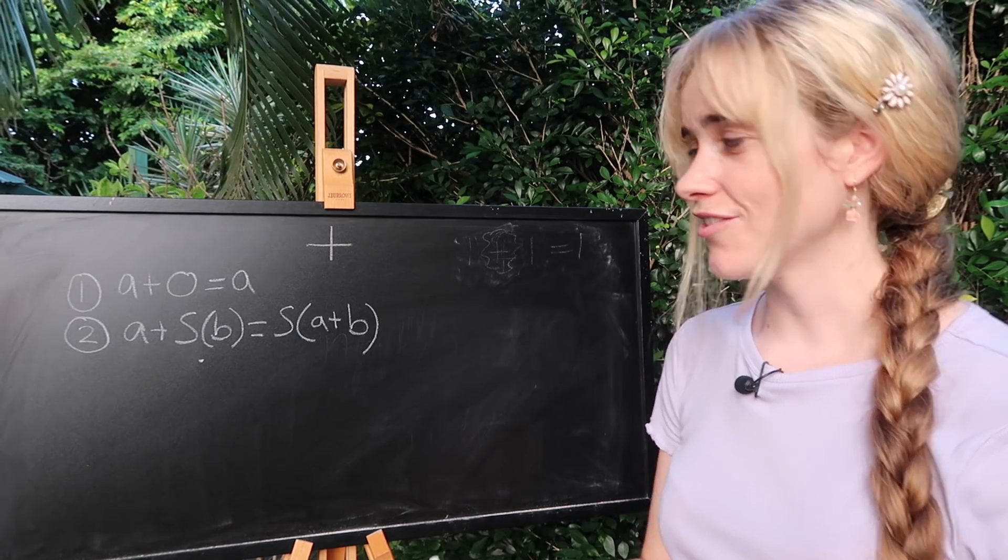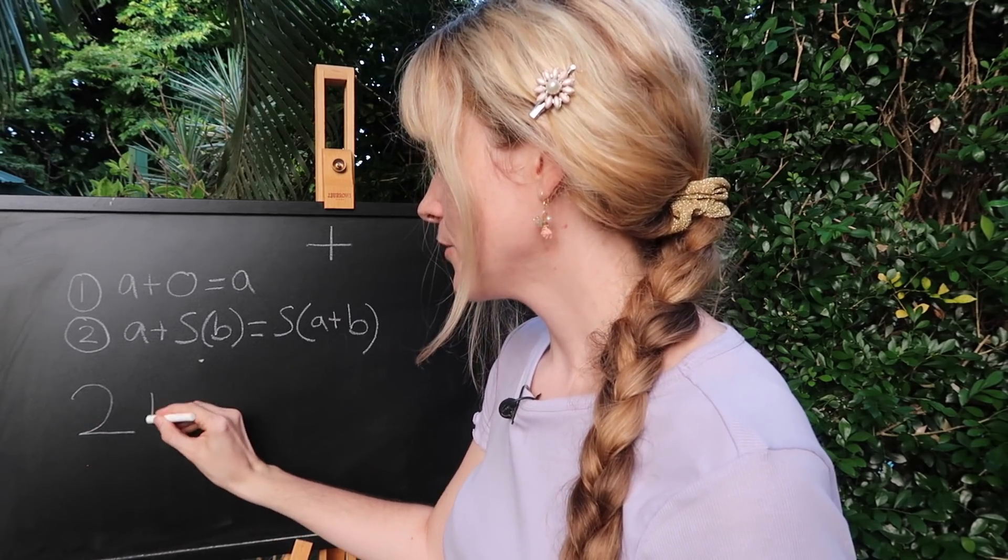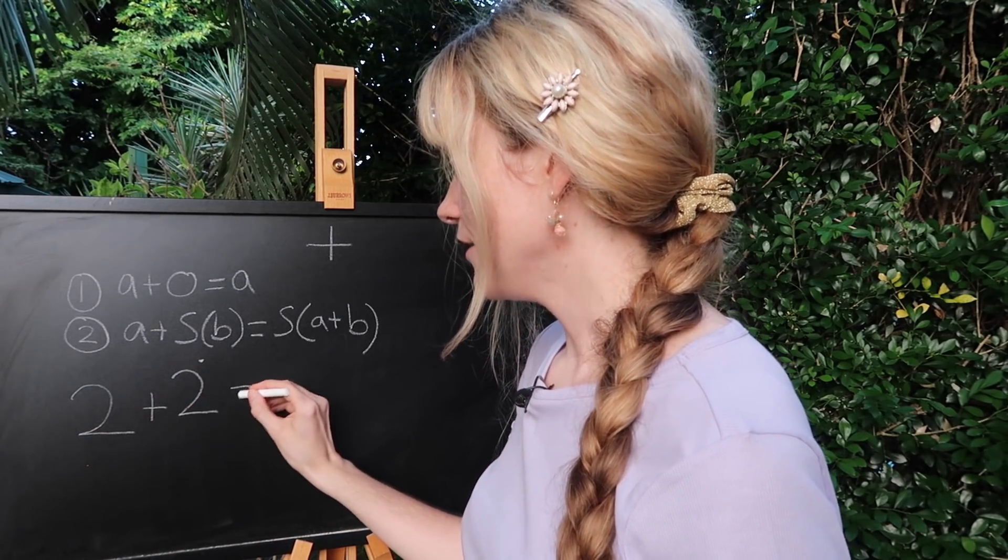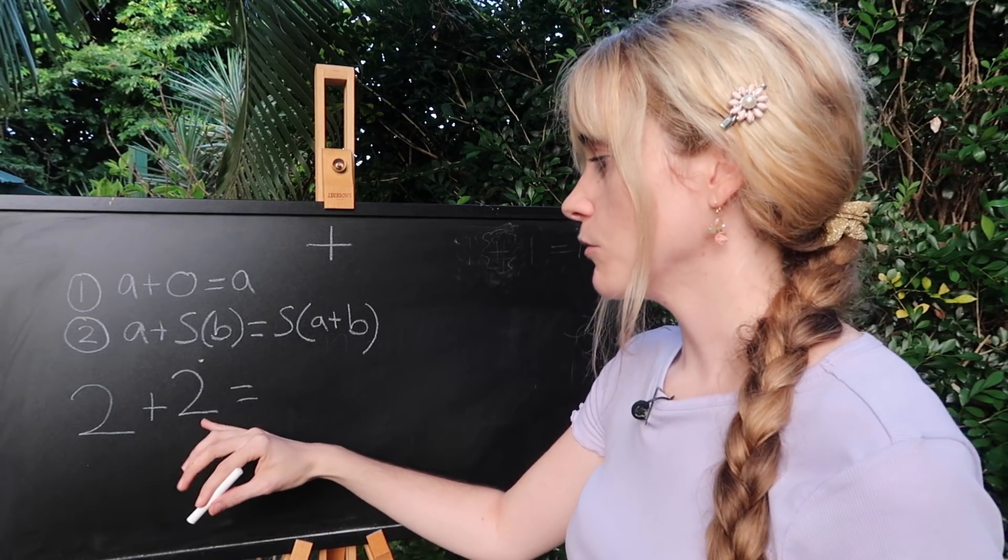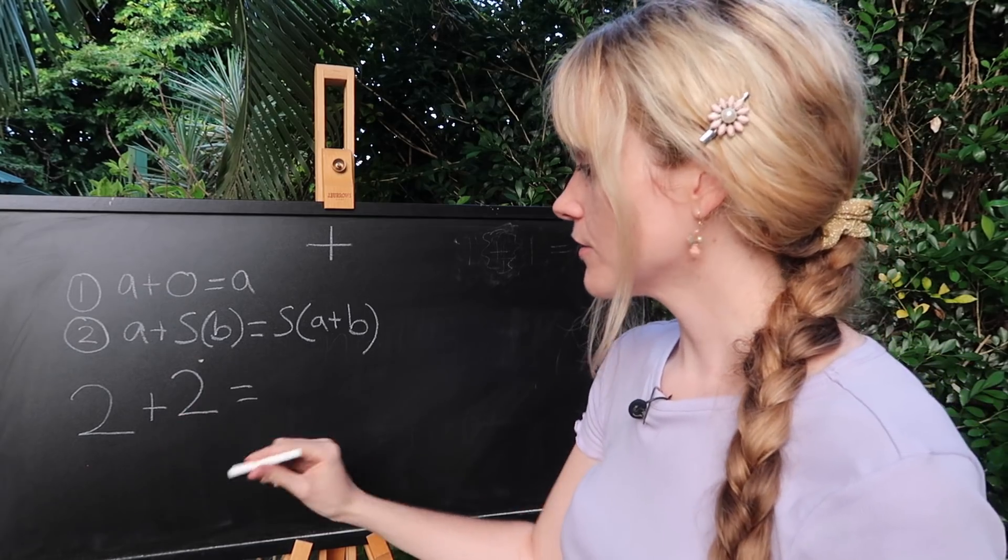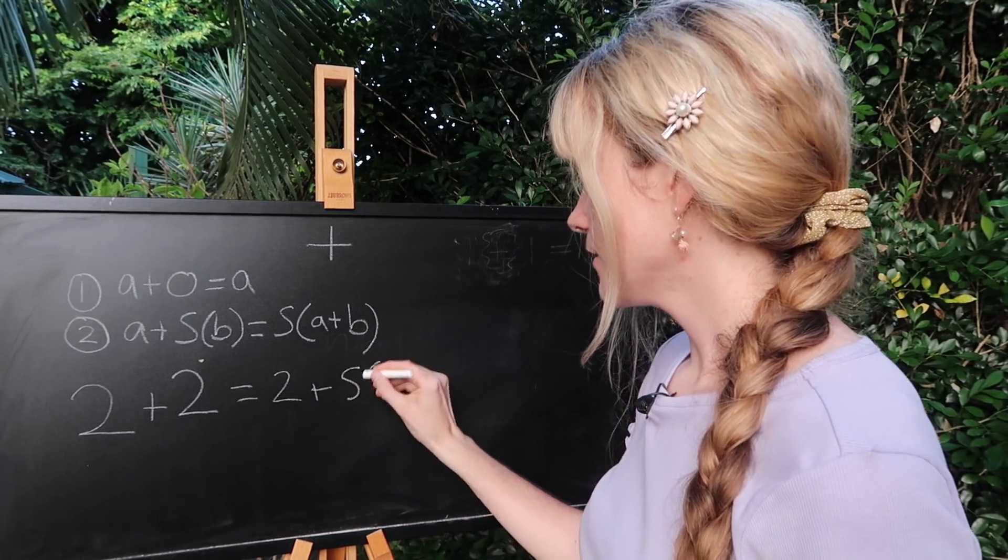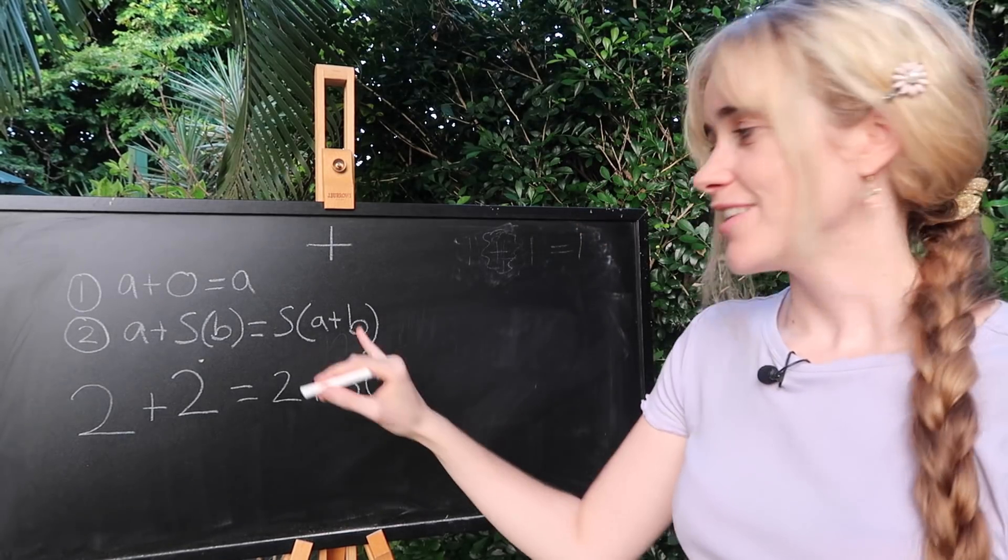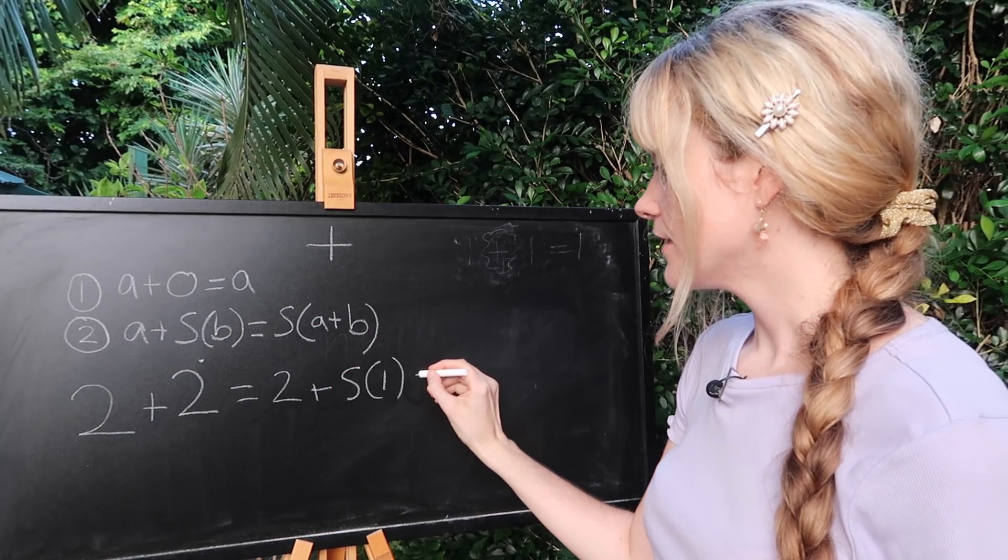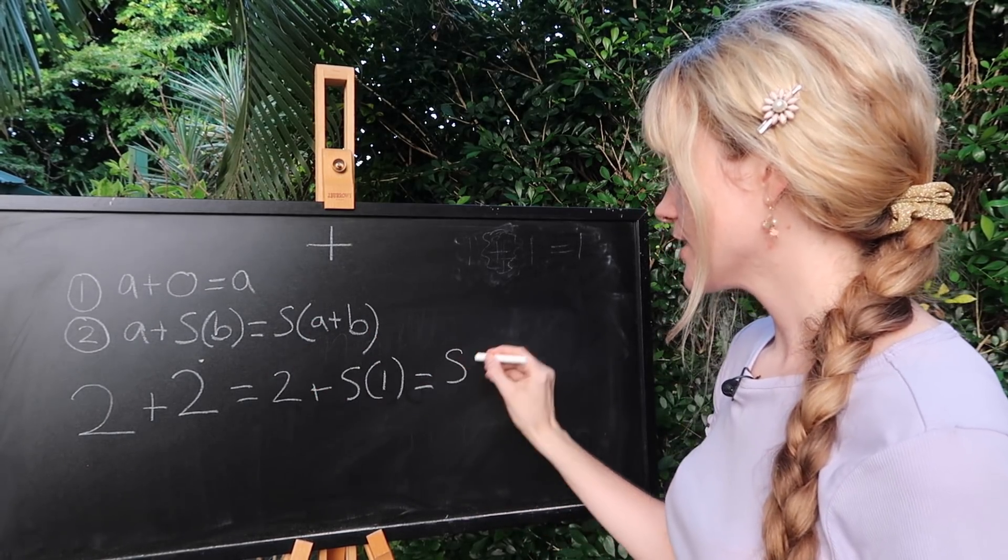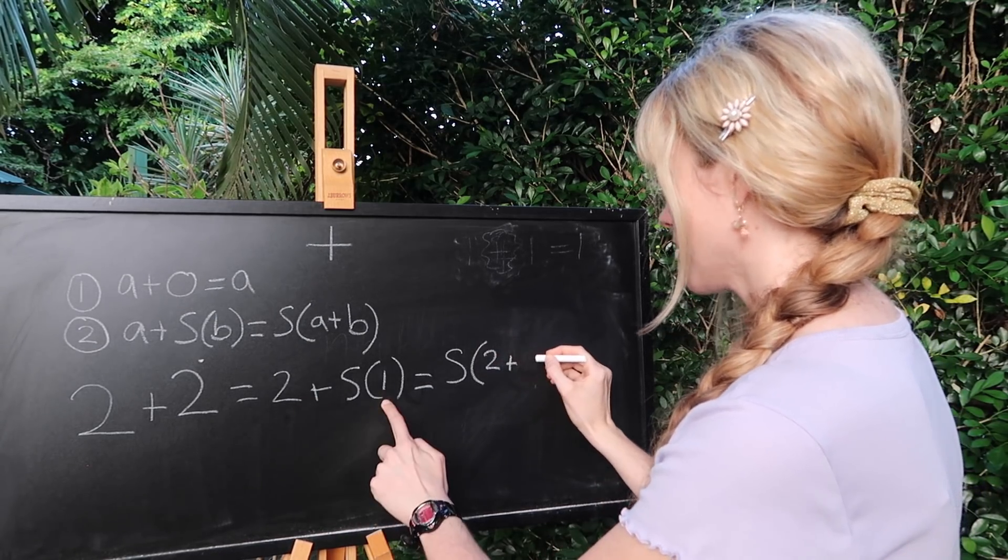Because now we're going to use them to try and figure out our elusive equation two plus two. Now this is going to be equal to two plus well what was two from before? We defined two to be the successor of one. And using this second rule here about successors, this would be equal to the successor of two plus one.